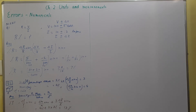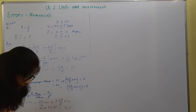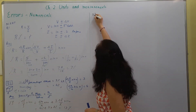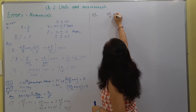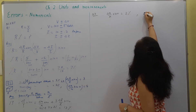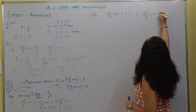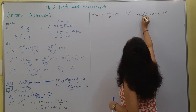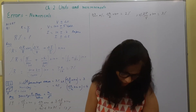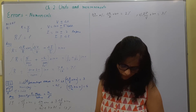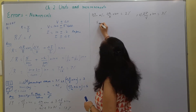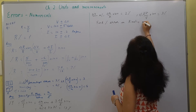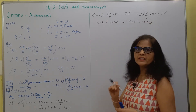Let's take another question. The percentage errors in the measurement of mass and speed are 2 percent and 3 percent respectively. The speed percentage error is change upon original into 100, given as 3 percent. You have to find the percentage error in the kinetic energy measurement.